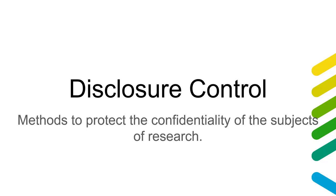Something very similar — disclosure control — is related to synthetic data but it's not synthetic data, though I think it's really useful to define it up front. Disclosure control refers to methods that allow us to protect the confidentiality of subjects of research. Simple examples might include removing first names from a dataset, adding noise to ages, weights or other numerical values, or even sampling the real data. It doesn't actually have to involve confidentiality in that approach — it's all about the way we apply it.